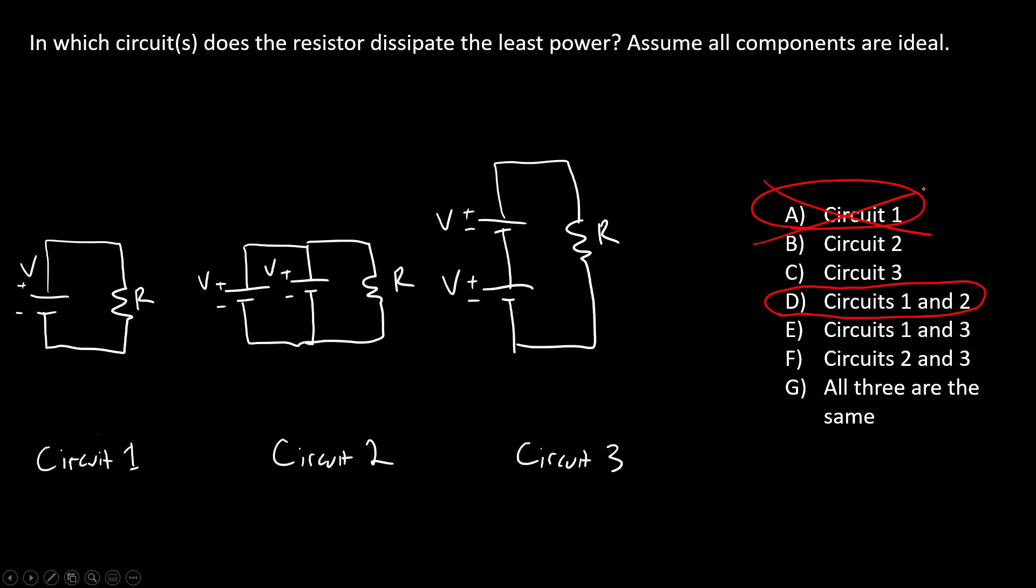And to explain why you need to remember some things about how the power through a resistor is calculated and how batteries in series and parallel work. So remember that power dissipated by a resistor is P equals IV. And that can also be written as I squared R or V squared over R if you do some substitutions using Ohm's law.